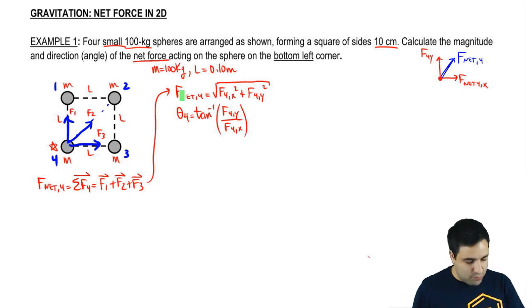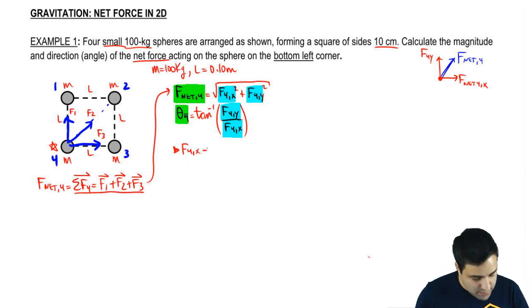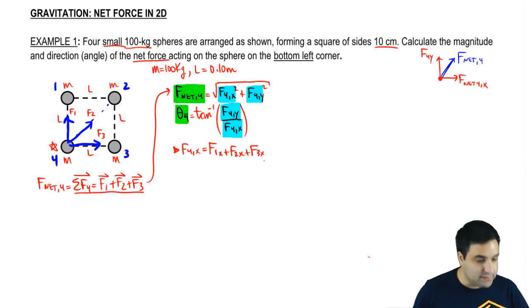So these are the two things I want. So to get these two variables, all you have to do is find F4x and F4y. How do I find F4x? Well, if F total is F1, F2, F3, then F4x is F1x, F2x, and F3x.